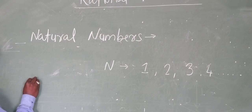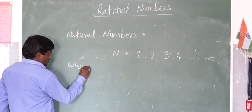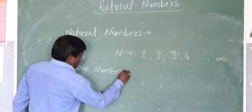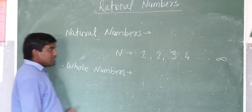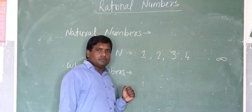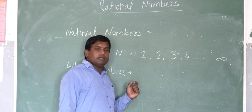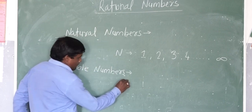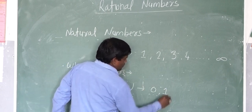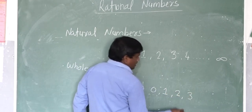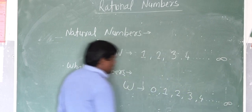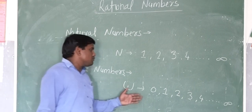Next one is whole numbers. All counting numbers together with 0 are called whole numbers. It is denoted by capital W, and it starts from 0, 1, 2, 3, 4, and so on to infinity.